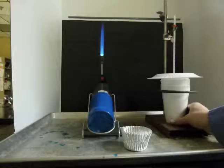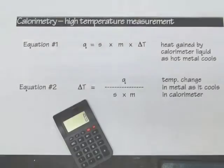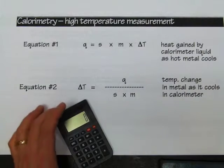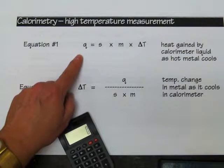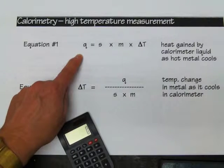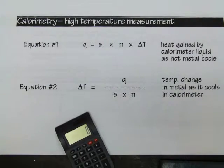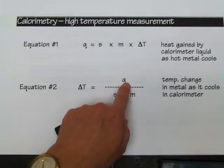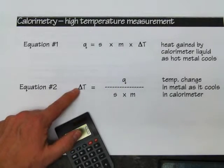If you were not here to do the experiment in class, you can use the data I'm demonstrating here. Now let's look at how to do the calculations. The strategy has two parts: first, we'll measure how much heat was gained by the calorimeter liquid and the foil cup inside. That heat gained equals the heat lost by the piece of metal when it cooled down inside the calorimeter.